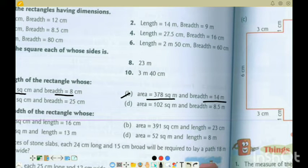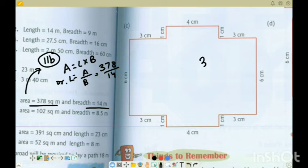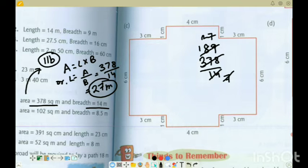Next, 11b. Area is equal to length into breadth. Area is given, breadth is given, so length is equal to area by breadth. Area is 378, breadth is 14. 378 divide by 14. We can divide by 2: 7 times 2 is 14, 189. Then divide by 7: 7 times 2 is 14, 49, 7 times 7 is 49. The final answer is 27 meter is the length.